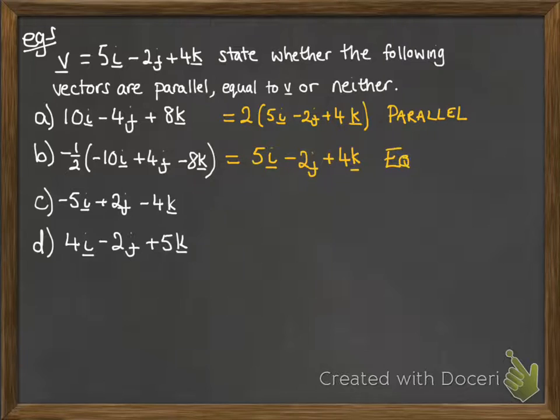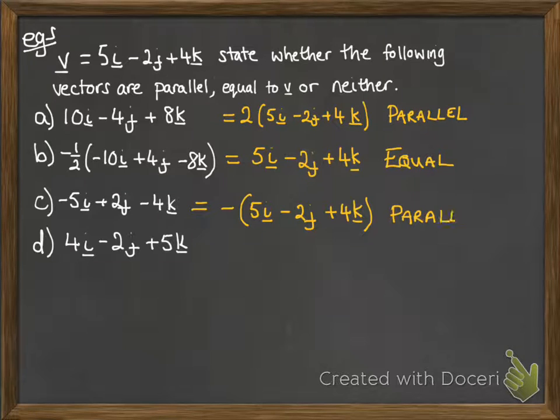This one, if we multiply out those brackets, we get the same as our vector V, so that's equal. This one is a negative multiple of V, so it's parallel.